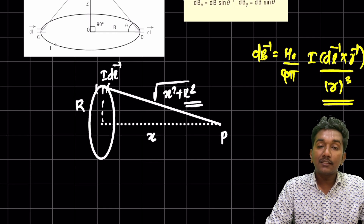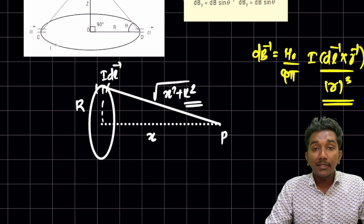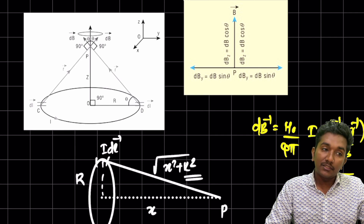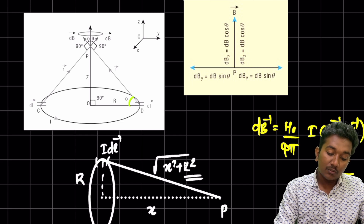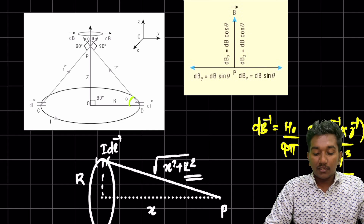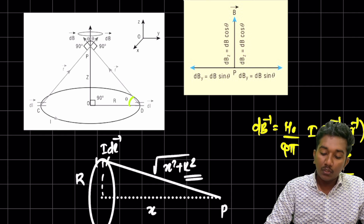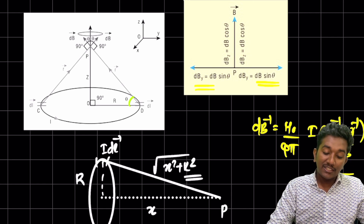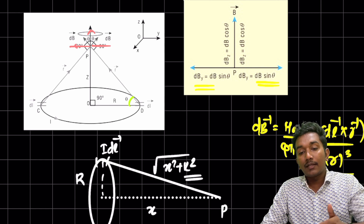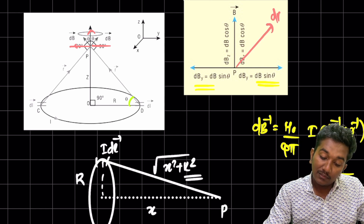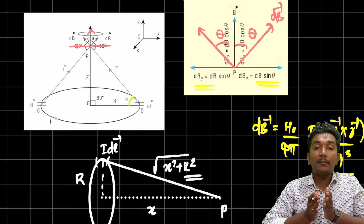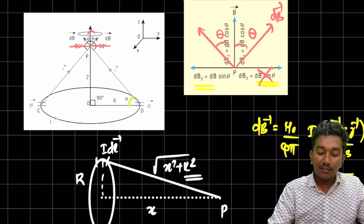The magnetic field dB must be perpendicular to both dl and r, making an angle θ with the axis. It is out of the plane. We can resolve dB into two components: dB sinθ and dB cosθ. For opposite elements on the circular coil, the dB cosθ components point along the axis in the same direction, while the dB sinθ components point in opposite directions and cancel each other out.